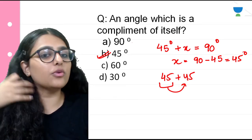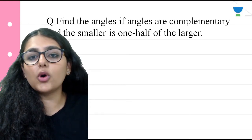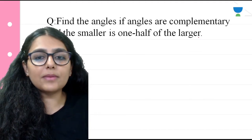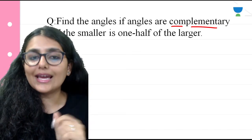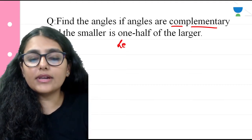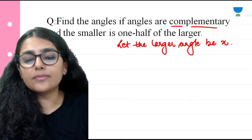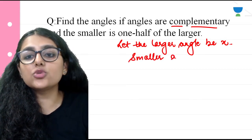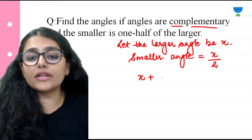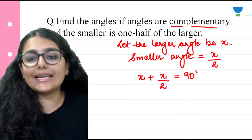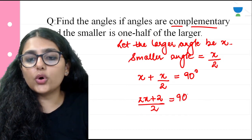Find the angles if they are complementary and the smaller one is one half of the larger. Let the larger angle be x. The smaller angle will be x by 2. Since both are complementary, x plus x by 2 equals 90 degrees. Taking LCM: 2x plus x upon 2 equals 90, so 3x equals 180.